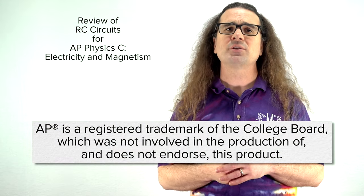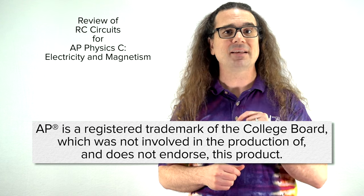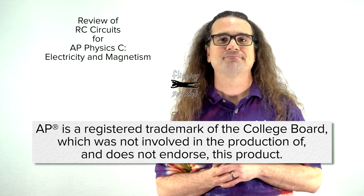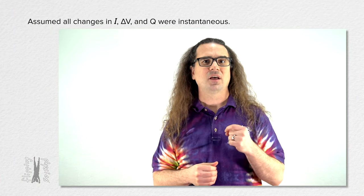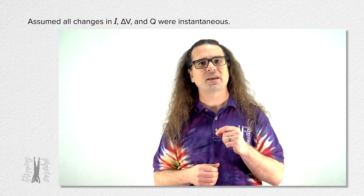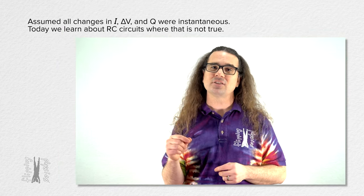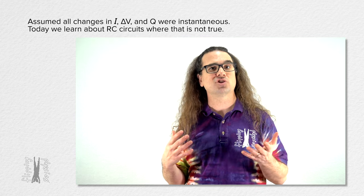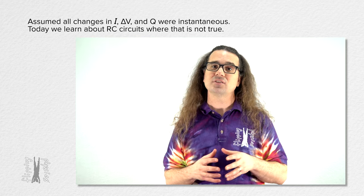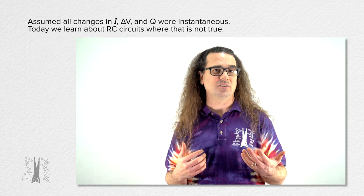Good morning. Today we are going to review RC circuits for AP Physics C Electricity and Magnetism. Up until this point we have assumed all changes in electric current, electric potential difference, and charge on capacitor plates were instantaneous. Today we put a resistor and a capacitor together in an electric circuit and learn how those variables change as functions of time. This is called an RC circuit because it is a resistor and a capacitor in a circuit.